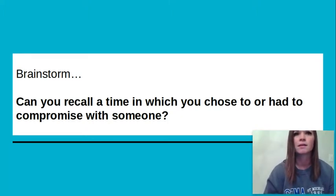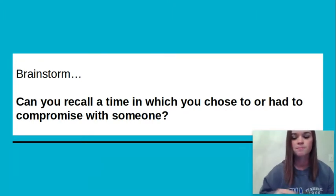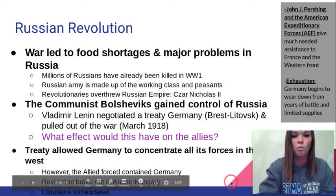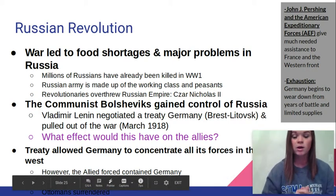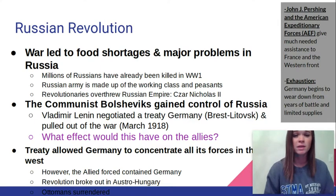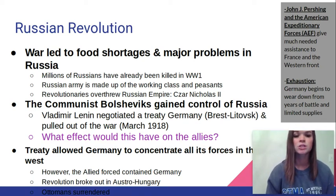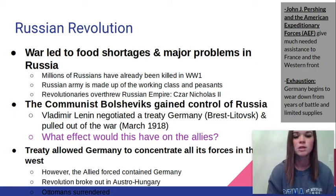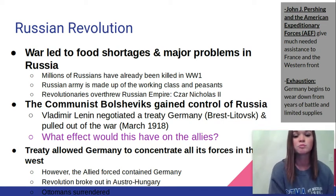How do we decide how the Allies can end this war? Starting with the Russian Revolution, which played a big part in the end of the war. Russia, remember, was a part of the Allies. The war had led to food shortages and major problems in Russia. Millions of Russians had already been killed in World War I, and the Russian army was made up of mostly the working class and peasants. Revolutionaries in Russia overthrew the empire, Tsar Nicholas II. The communist Bolsheviks gained control of Russia after their empire was overthrown. Vladimir Lenin negotiated a treaty with Germany, and Russia decided to pull out of the war in the spring of 1918.